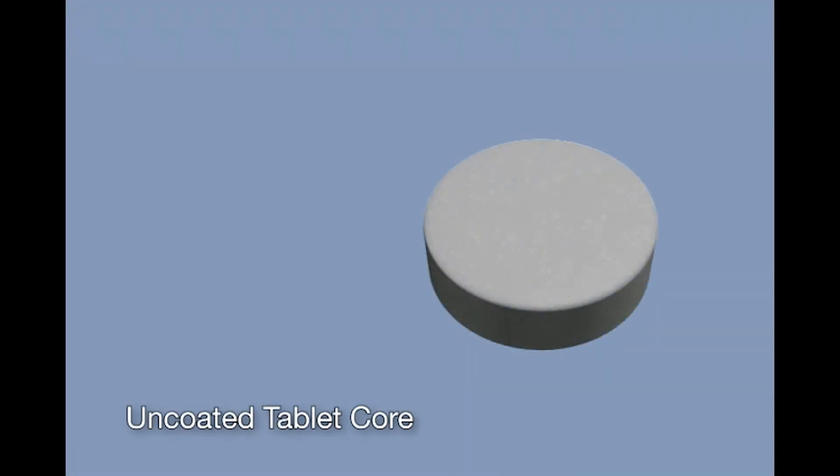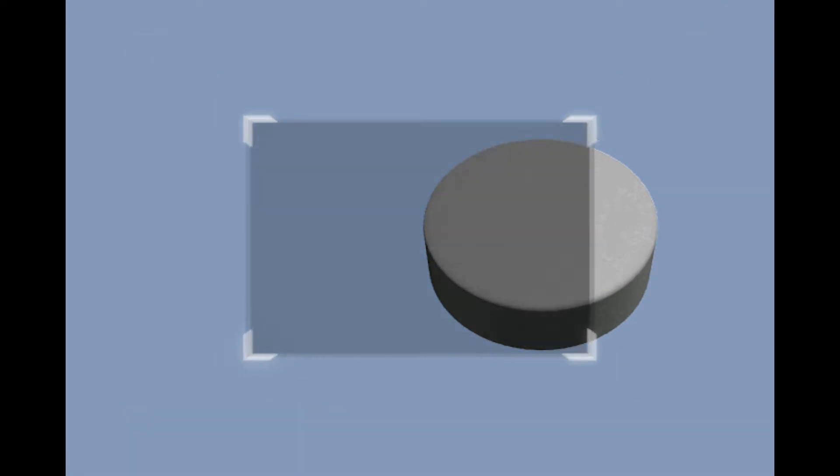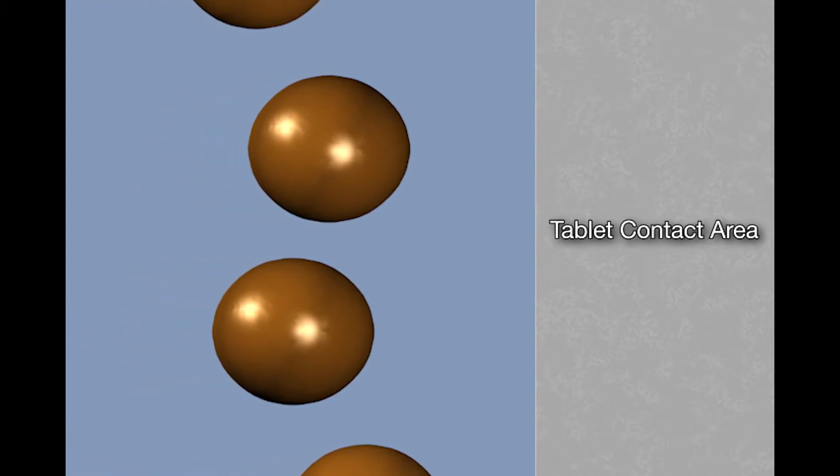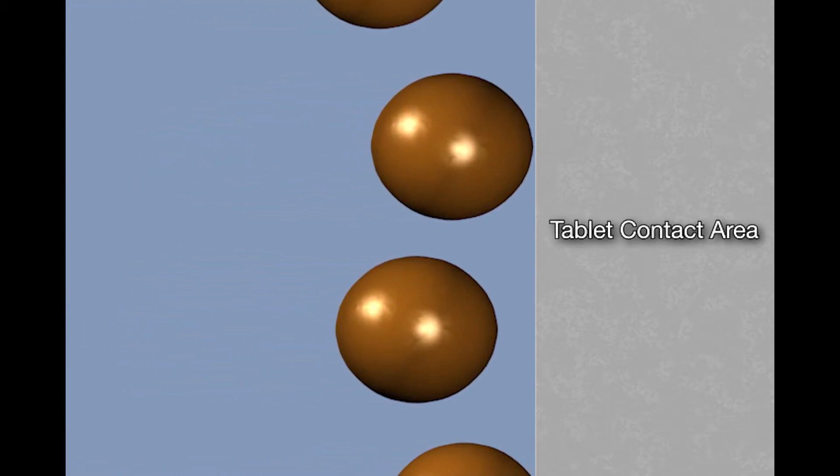The process of film formation can be viewed in three stages. An atomized droplet is applied to the tablet and moisture evaporates at a rate that is dependent on the air inlet temperature and humidity as well as the physical properties of the tablet and coat.